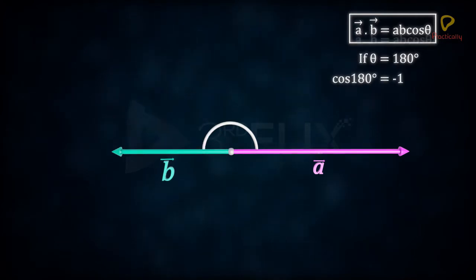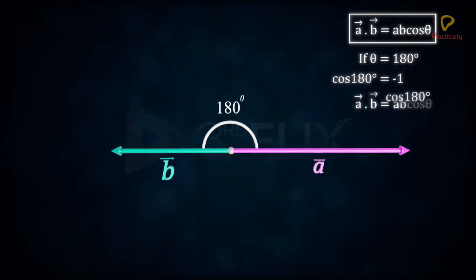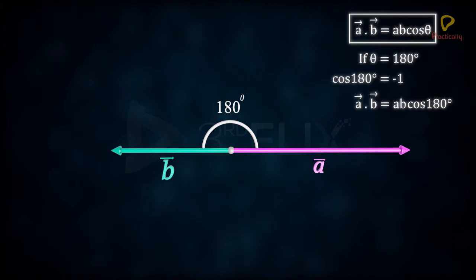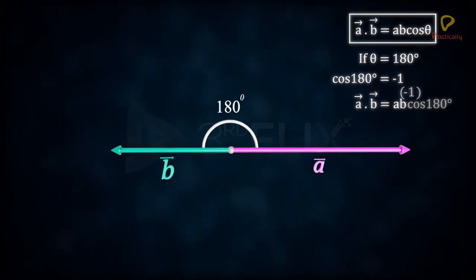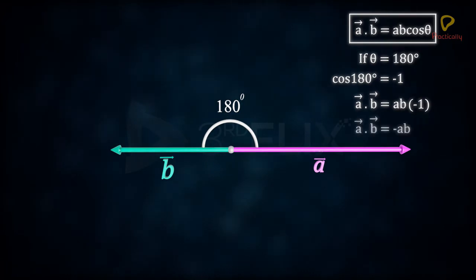If vectors are opposite to each other, the angle between them is 180 degrees. Cos 180 is minus one. So the dot product becomes negative.